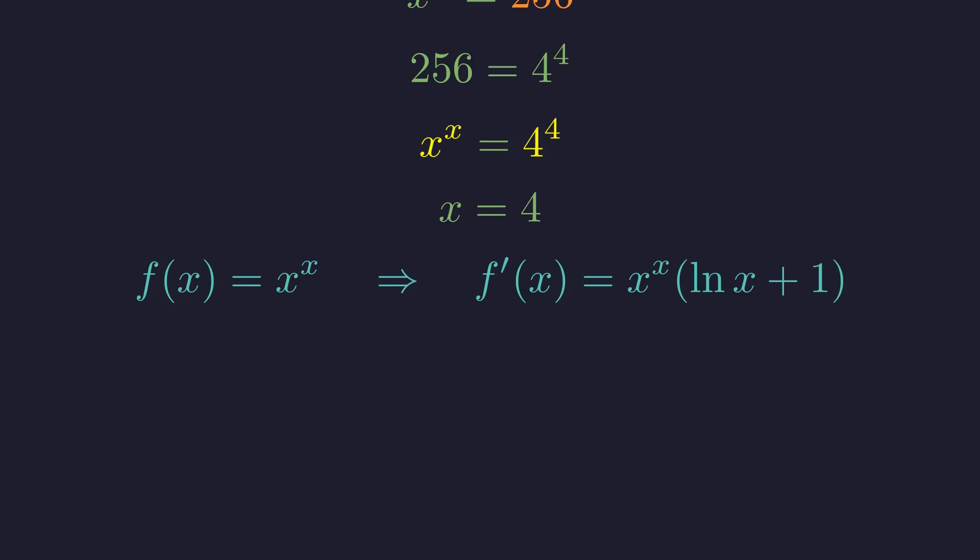We can confirm this by analyzing the derivative. The derivative of x to the x is x to the x times the quantity natural log of x plus 1. For any x greater than 1 over e, this derivative is positive. This proves the function is strictly increasing in that domain, which guarantees our solution is unique.